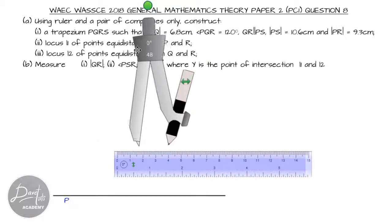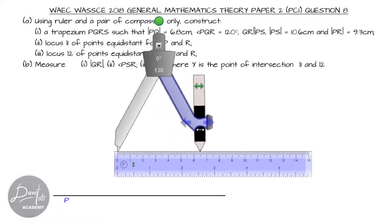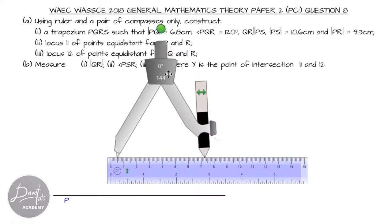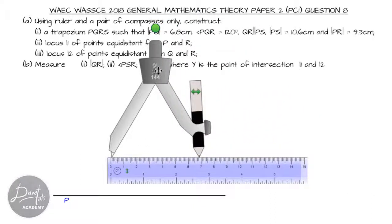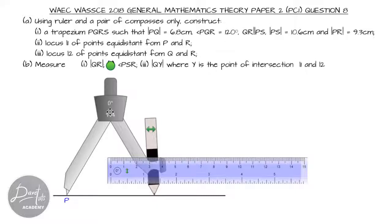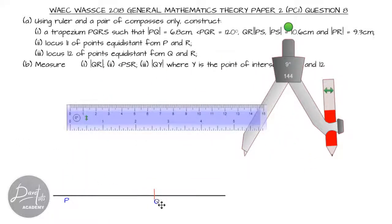I can get 6.8 centimeters by taking my compass and taking its measurement to be 6.8 from the zero point of reference. From zero, I'm having 6.8, then I can cut an arc. Between P and the arc that is being drawn, that is 6.8 centimeters, and that point of the arc is point Q.